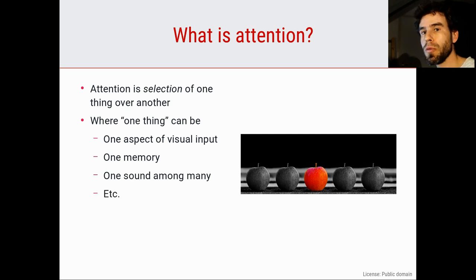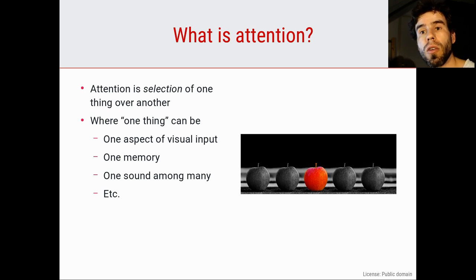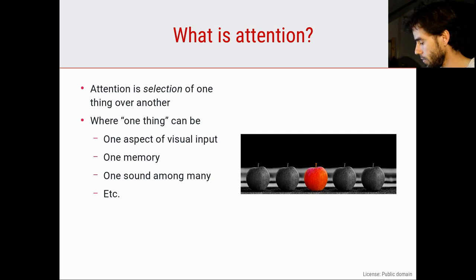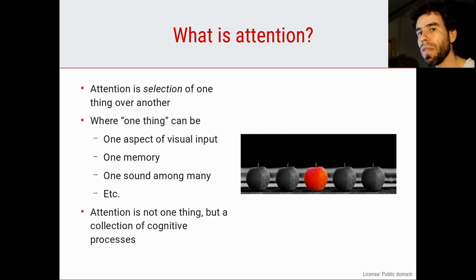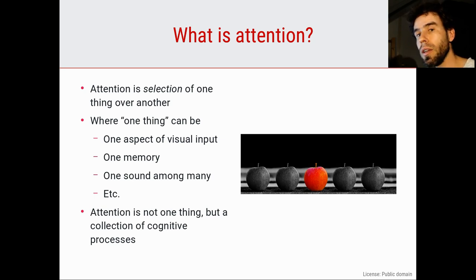There are many, many forms of attention. Right now, my attention is focused on my visual sense mostly and also my hearing because I'm listening to myself speak and looking at myself in the screen of the camera. I'm not so much paying attention to the feeling of the carpet under my feet. Attention is not really one thing — there's not one process that is attention. Rather, selection is a very important part of all cognitive processes. Attention is really an umbrella term that describes all these different forms of selection that are so important for every cognitive process.